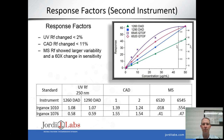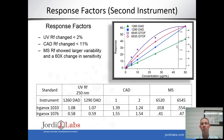Looking at response factors using a second instrument, we can ask whether response factors are consistent across platforms. For UV, comparing the 1260 and 1090 DAD detectors, we got very similar response factors on both — minimal variability across these two platforms. With CAD, using two different models again showed relatively consistent responses. With MS, comparing the 6520 QTOF and 6545 QTOF revealed the most significant variability, with a very significant improvement in Ergonox 1010 response on the newer 6545 QTOF due to improved ionization. Over time, as mass specs improve and ionize more of the injected compound, response factor variation should decrease.